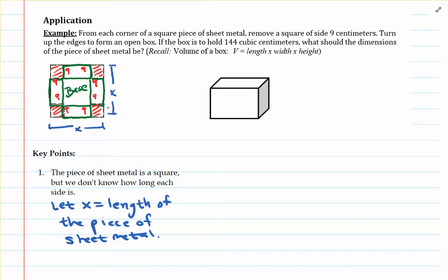18, exactly. So that means that the length of the base of the box is not going to be x, but it's actually going to be x reduced by 18, or as an expression, x minus 18.